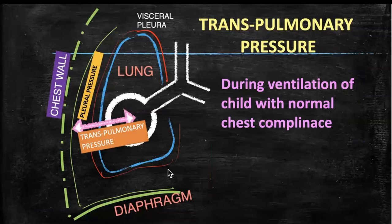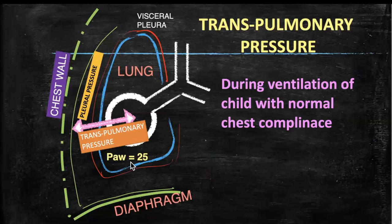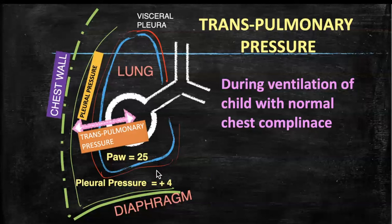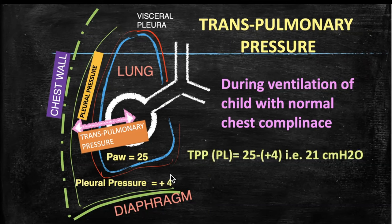This can be understood with an example. For a child with normal chest wall compliance, suppose you have a plateau pressure of 25 centimeters of water displayed on the ventilator screen, and during positive pressure ventilation your pleural pressure is plus 4 during inspiration. Then trans-pulmonary pressure = 25 minus (+4) = 21 centimeters of water.